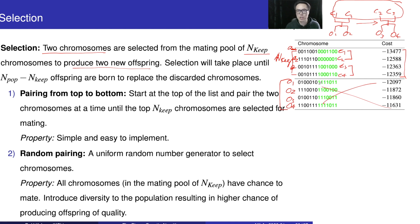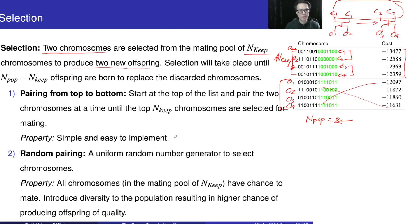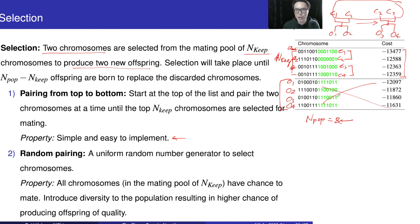One thing to note is that when we choose the population size n-pop, this population size will not change. So if n-pop is 8, we generate a sufficient number of offspring to fill up the population to be 8. The property of this pairing from top to bottom approach is that it is very simple and easy to implement. But the thing is we only pair good with good, mediocre with mediocre, bad with bad, so we may not introduce a lot of diversity to the population in the offspring. We can use other approaches to improve diversity and adjust the exploitation and exploration properties.